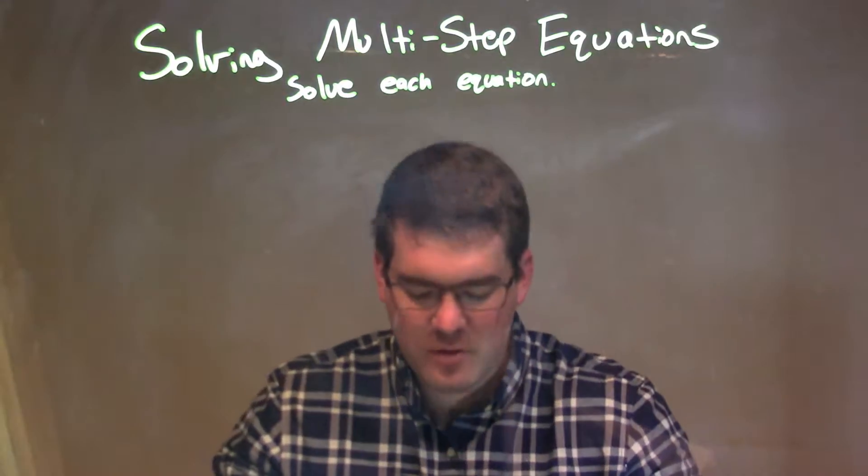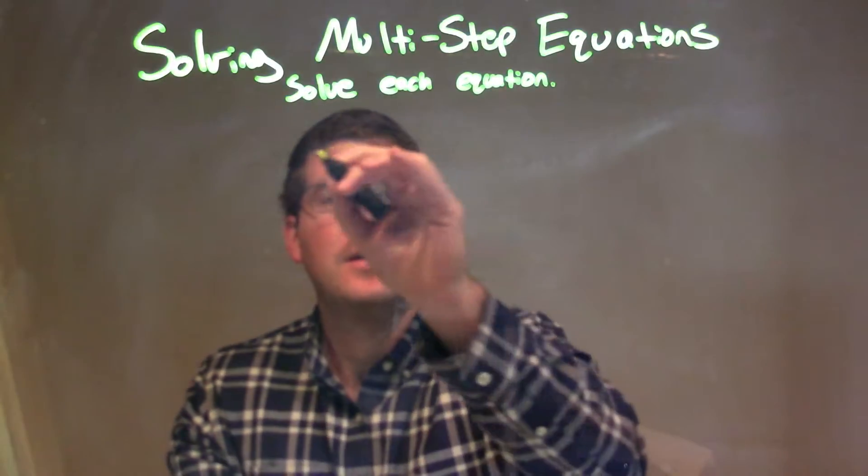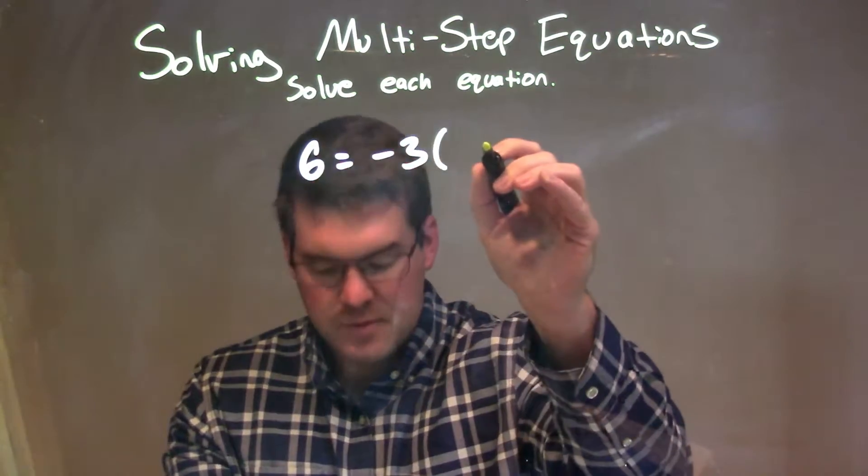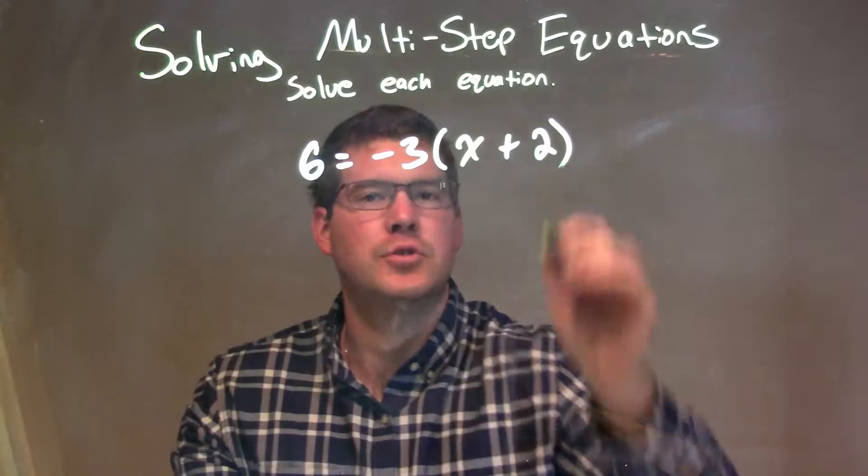And we'll solve each equation. So if I was given this equation here, 6 equals negative 3 times x plus 2.